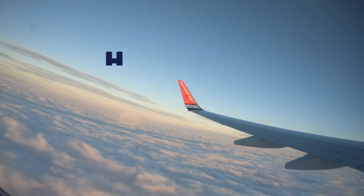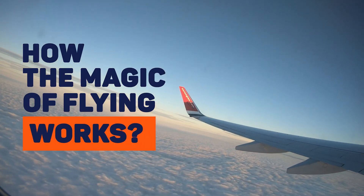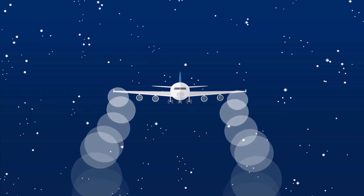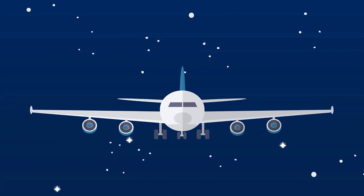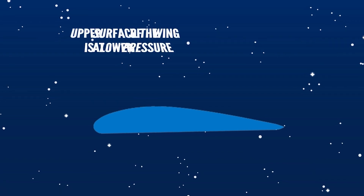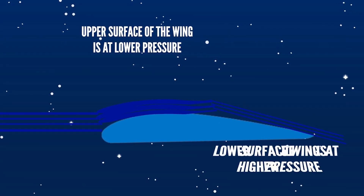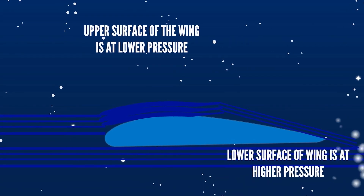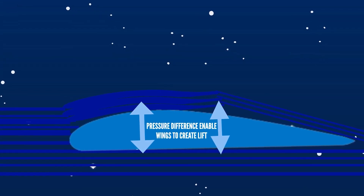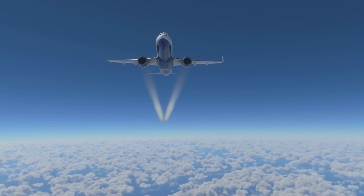To explain wake turbulence we need to understand how the magic of flying works. Wingtip vortices, or tip vortices, are generated due to the difference in pressure between the upper and lower surface of the wing. The upper surface of the wing is at a lower pressure and the lower surface is at a higher pressure — the same pressure difference that enables a wing to create lift.